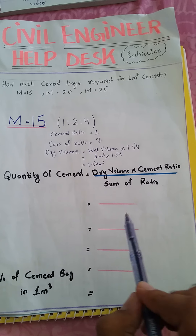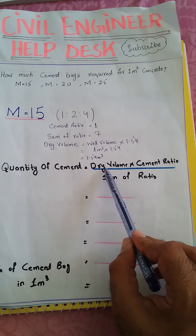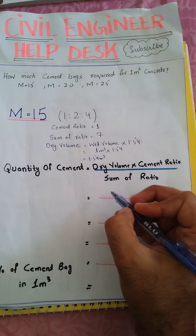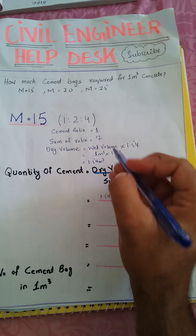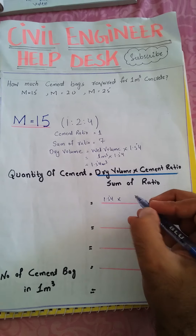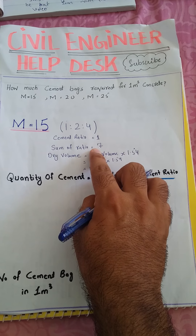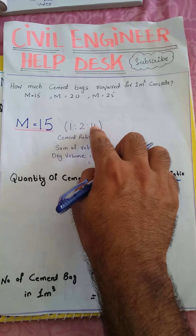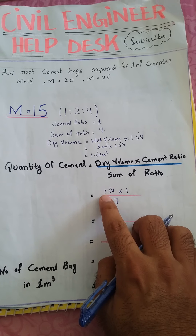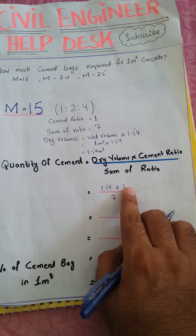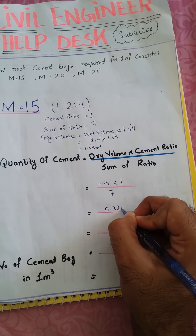Now the formula: quantity of cement equals dry volume multiplied by cement ratio, divided by sum of ratio. Dry volume is 1.54, cement ratio is 1, and sum of ratio is 7. So we calculate 1.54 multiplied by 1 divided by 7, and we get 0.22 cubic meters.